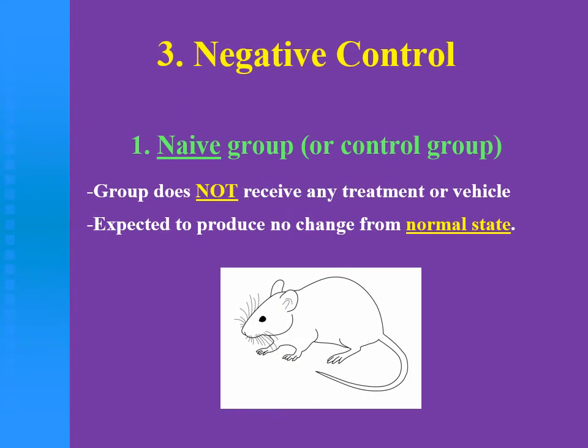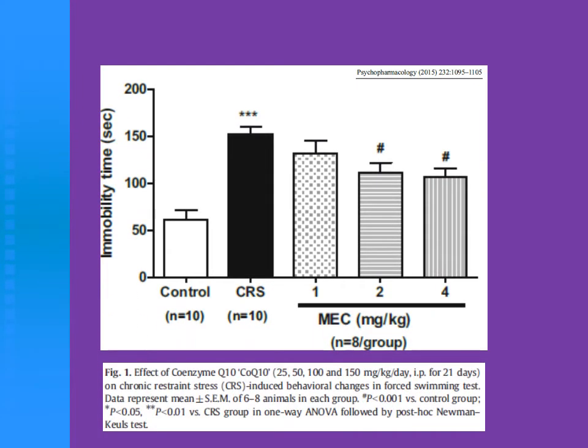First, the naive group, which doesn't receive any treatment or vehicle. We consider this group as the normal state or normal rats. For example, in this research, the control group is the naive rat that receives nothing — neither vehicle nor any intervention.